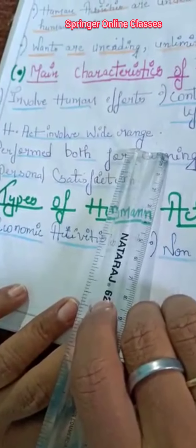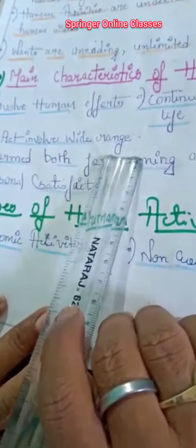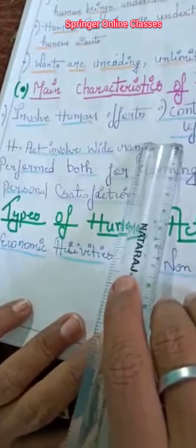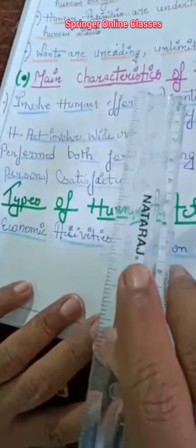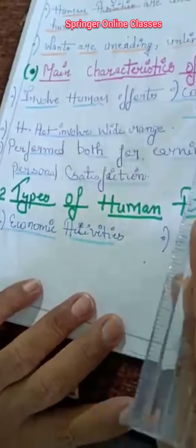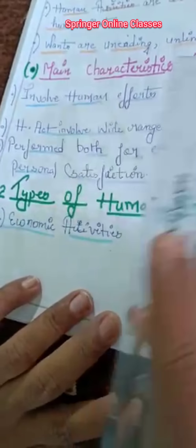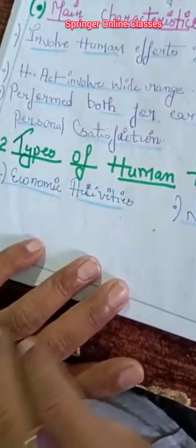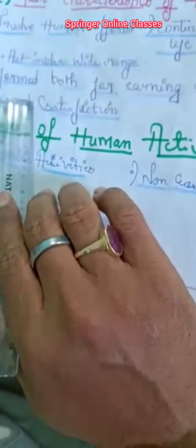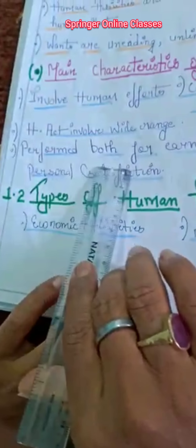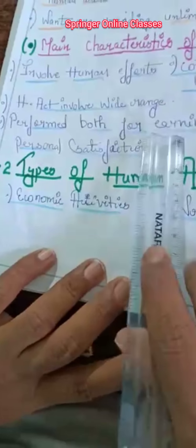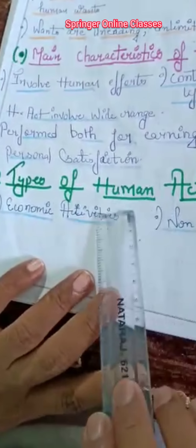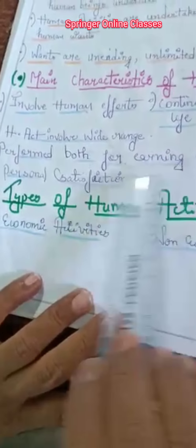The third feature is that Human Activities Involve a Wide Range — thousands of activities exist, but all can be classified into two: economic and non-economic. In economic: business, profession and employment. In non-economic: social, religious, patriotic, and many more. The fourth feature is that activities are performed both for earning and obtaining personal satisfaction — we perform economic activities for earning income and wealth, and non-economic activities for personal satisfaction.